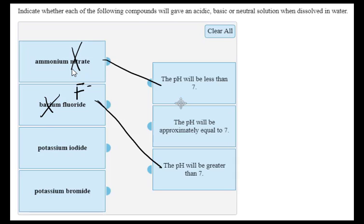Potassium iodide. Potassium is a group 1 metal, contributing no acid-base chemistry. Iodide is a conjugate base of a strong acid. So the pH will be approximately equal to 7.